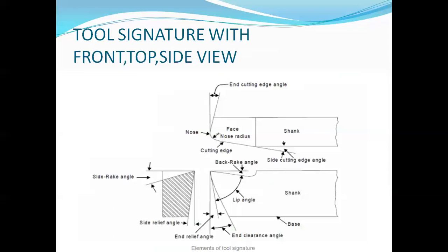This is the front view, top view, and side view of a single-point cutting tool. You can see the slope of the rake surface or face. The angle between the inclination of the rake surface and the line parallel to the base is called the rake angle. If this inclination of the face goes downward toward the cutting point, it is called positive rake, which is generally used for machining ductile and soft materials. When the slope goes upward from the cutting point, it is a negative rake, which is harder and stronger and used for machining hard materials.